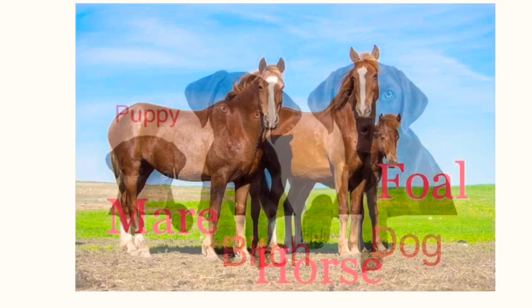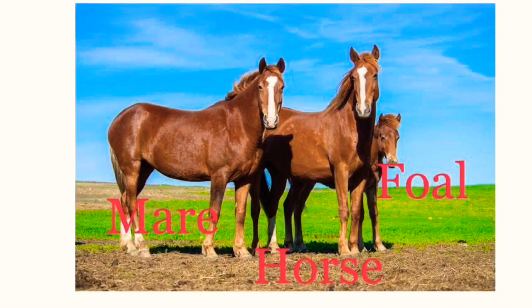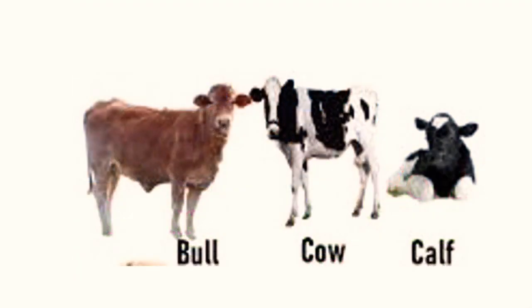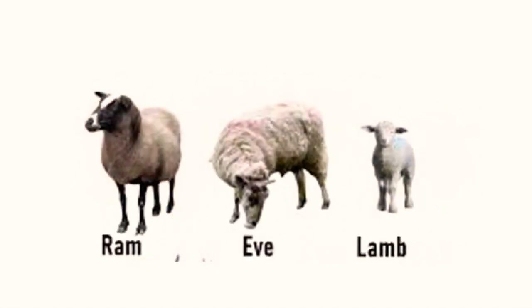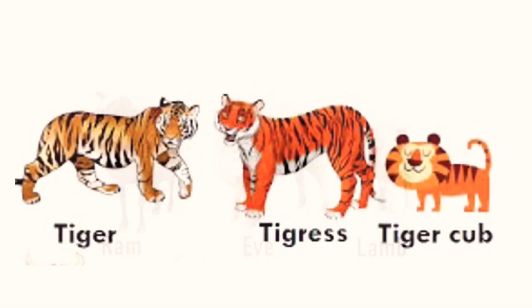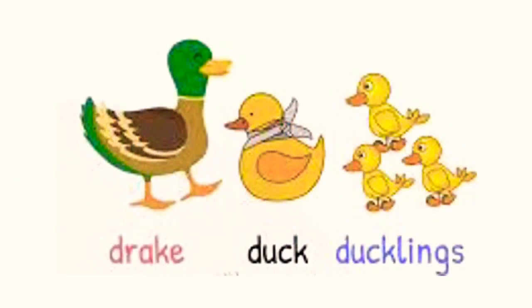Horse, mare, foal. Cow, bull, calf. Ram, ewe, lamb. Tiger, tigress, tiger cub.